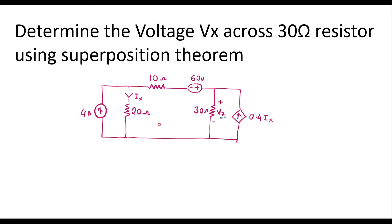We can observe that this circuit consists of three sources: one is an independent current source, this is an independent voltage source, and here we have a current-dependent current source. So while considering superposition theorem, we have to consider one independent source at a time, and the dependent source should be kept as it is.